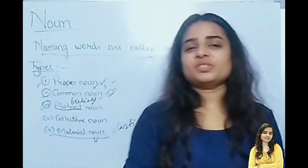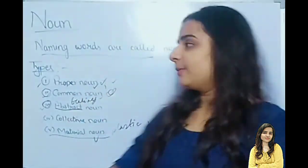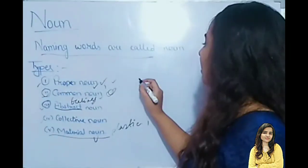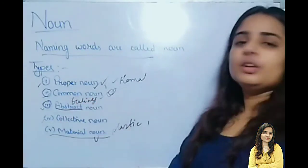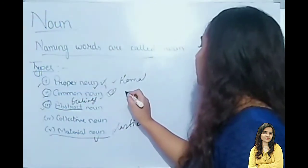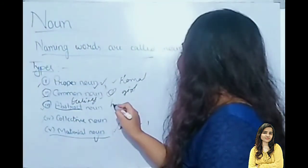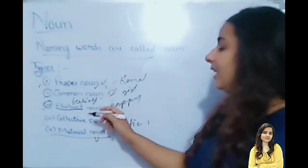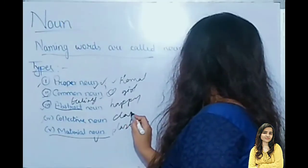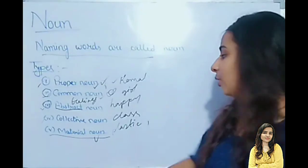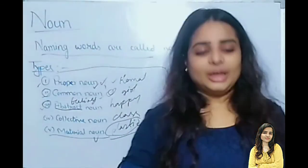I am from Assam — if anyone has any concern, you can send me a message. So to give quick examples: 'name' is a common noun; your specific name is a proper noun. Abstract noun — 'I am happy.' Collective noun — I am teaching you, that is a group, that is a class. Material noun — I am using a marker and it is made from plastic, so plastic is the material noun. I hope you understand the class today.